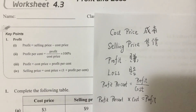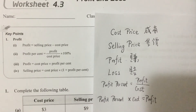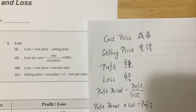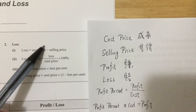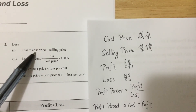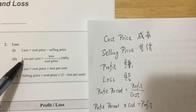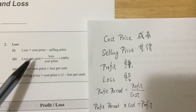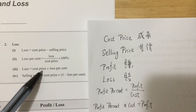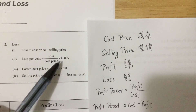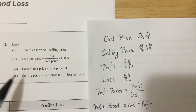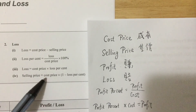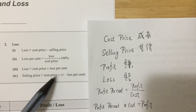Now other than cost price, selling price, and profit, we also have the loss formulas. For loss, the selling price must be lower than the cost price, so loss equals cost price minus selling price. The loss percent equals loss over cost price times 100%. Similarly, Formula 3 for loss: loss equals cost price times loss percent. The cost price is always in the denominator. Finally, selling price equals cost price times (1 - loss percent), because you lose something, so you subtract the loss.